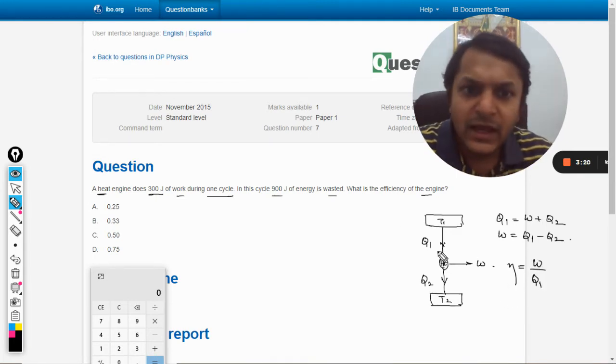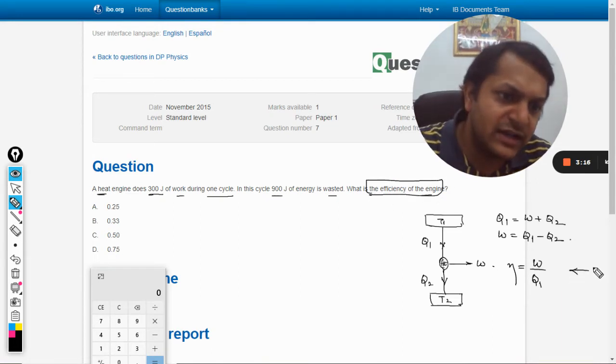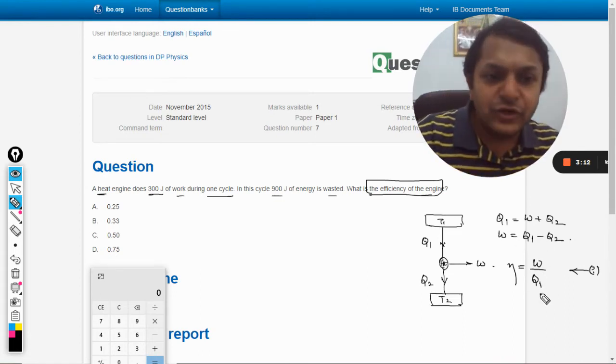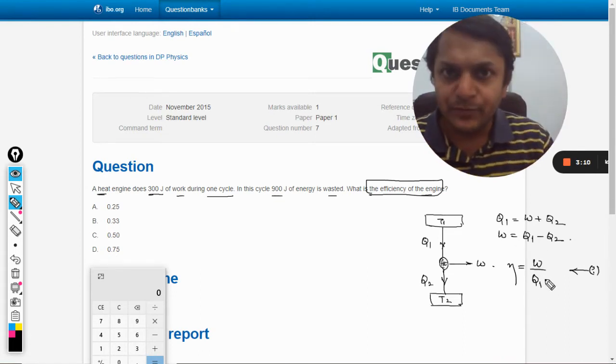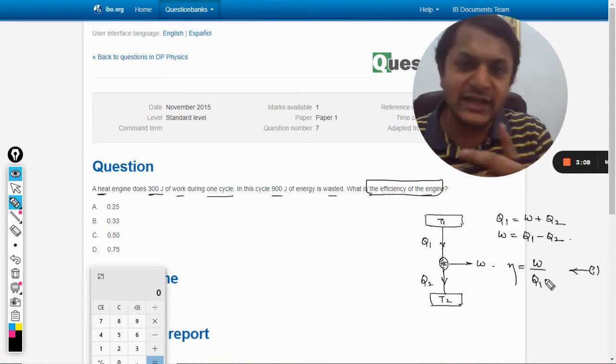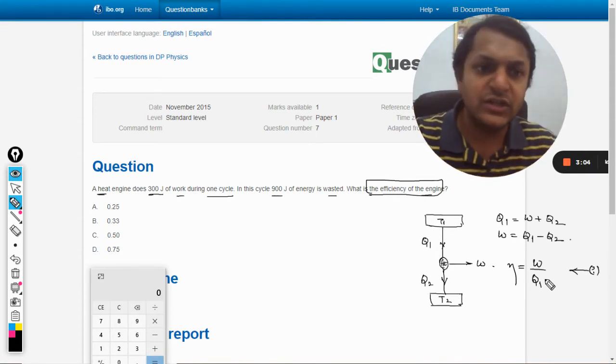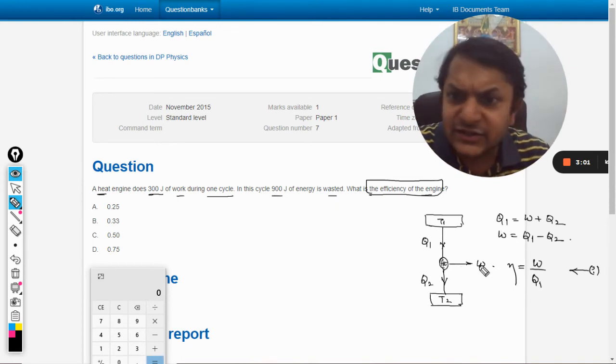They are asking for the efficiency of the engine at this point. For this, we need to find W, the total work, and Q1, the total heat coming from the source to the engine. The given values are: 300 joules of work and 900 joules of wasted energy.